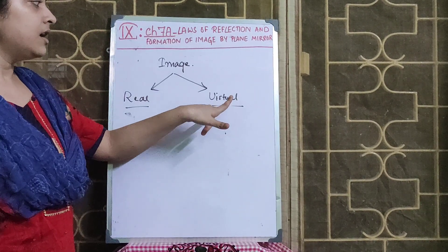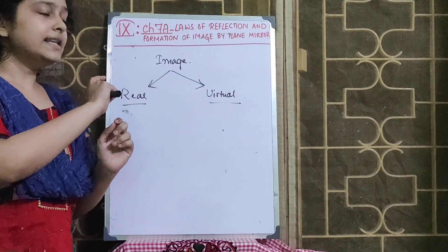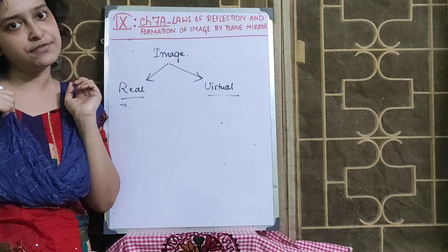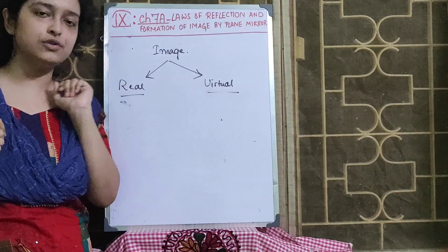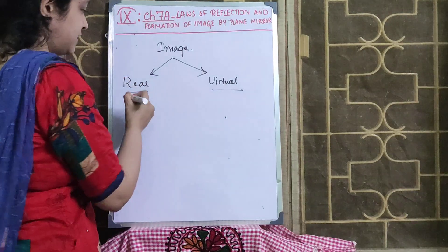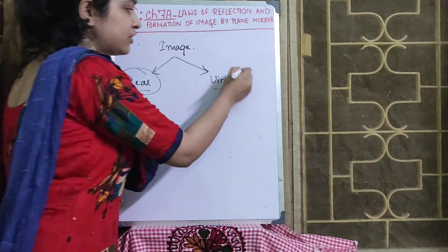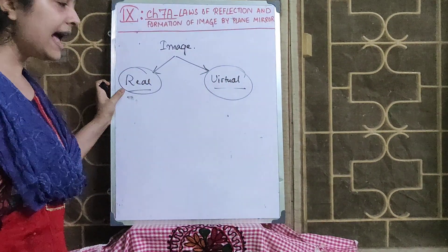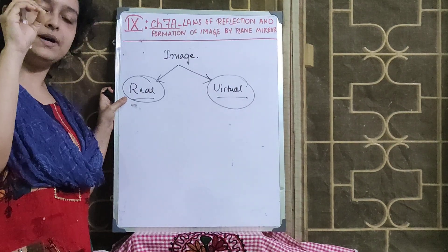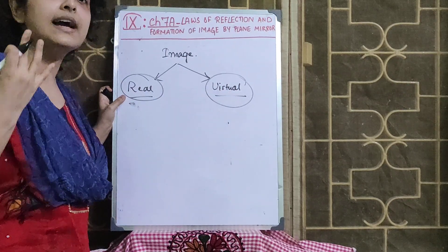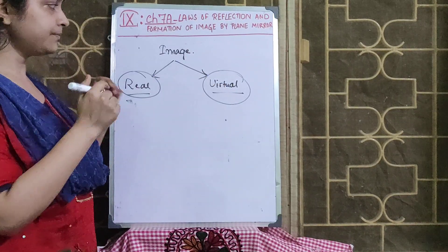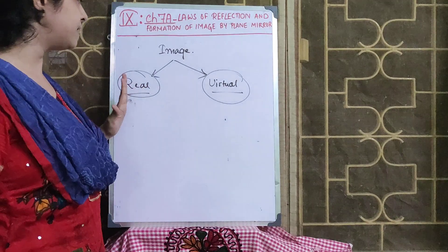For a virtual image, the reflected rays do not actually meet but they appear to meet — for example, in a convex mirror and also in a plane mirror, which forms a virtual image. For a virtual image, the image will be an upright or erect image. For a real image, the reflected rays are actually meeting at some point, and if we keep a screen at that point, we can obtain that image. For a virtual image, we cannot obtain it on the screen because they only appear to meet.